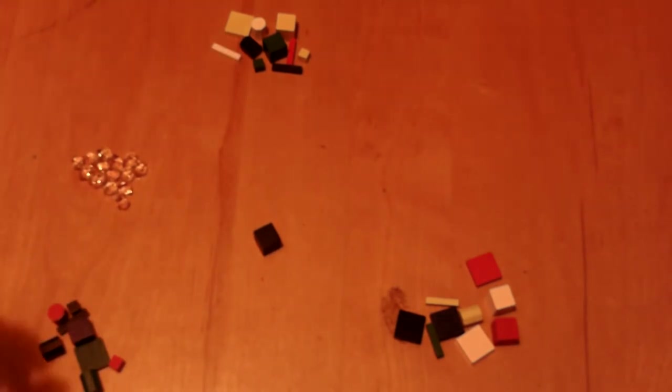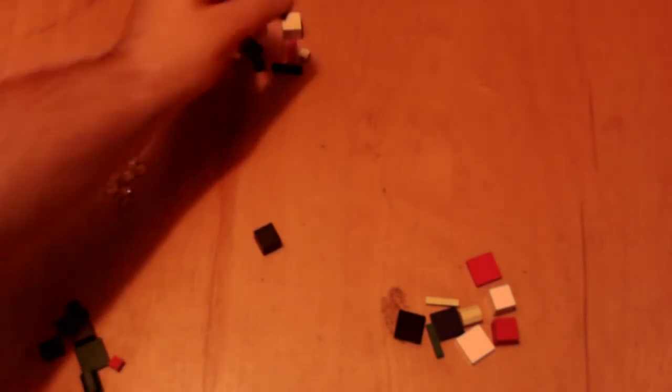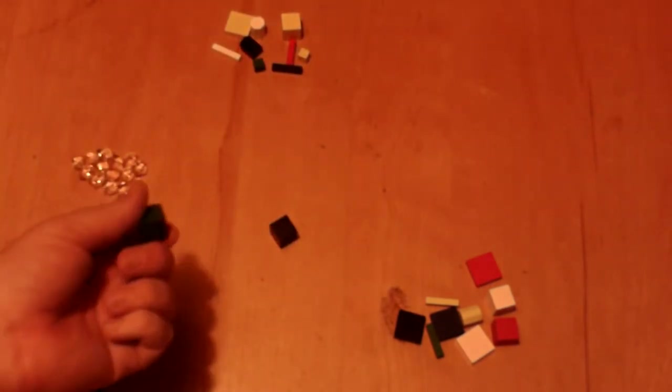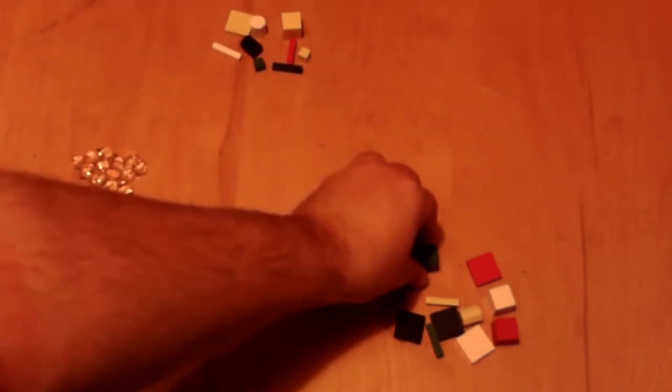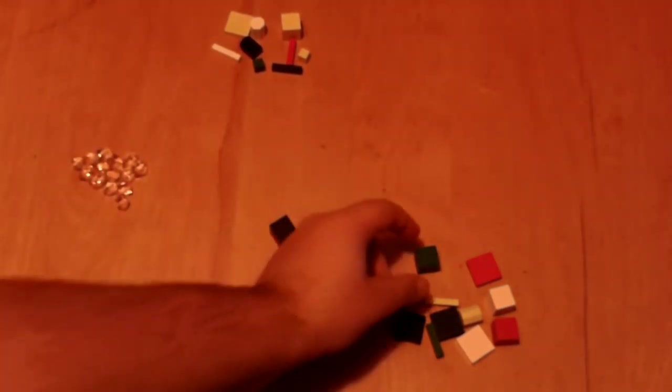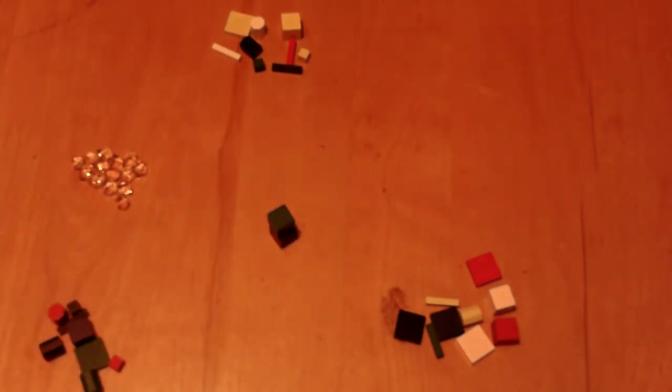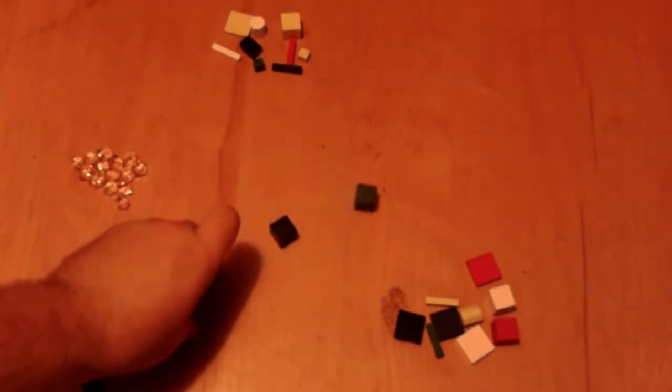After that, each player on their turn is then going to choose one of the blocks that are either the same shape or same color as the previous placed block, give it to the opponent on their left, and that opponent is going to place the block on the tower. You want to do this in such a way that you avoid knocking the tower over.